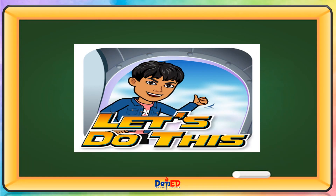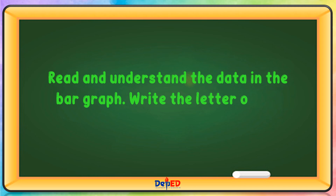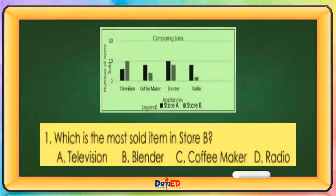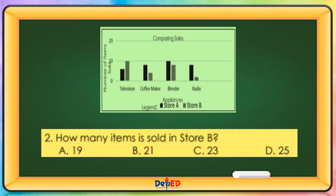Let's do this. Read and understand the data in the bar graph and write the letter of the correct answer. Which is the most sold item in store B? The correct answer is letter A — Television. How many items are sold in store B? The correct answer is letter C — 23.